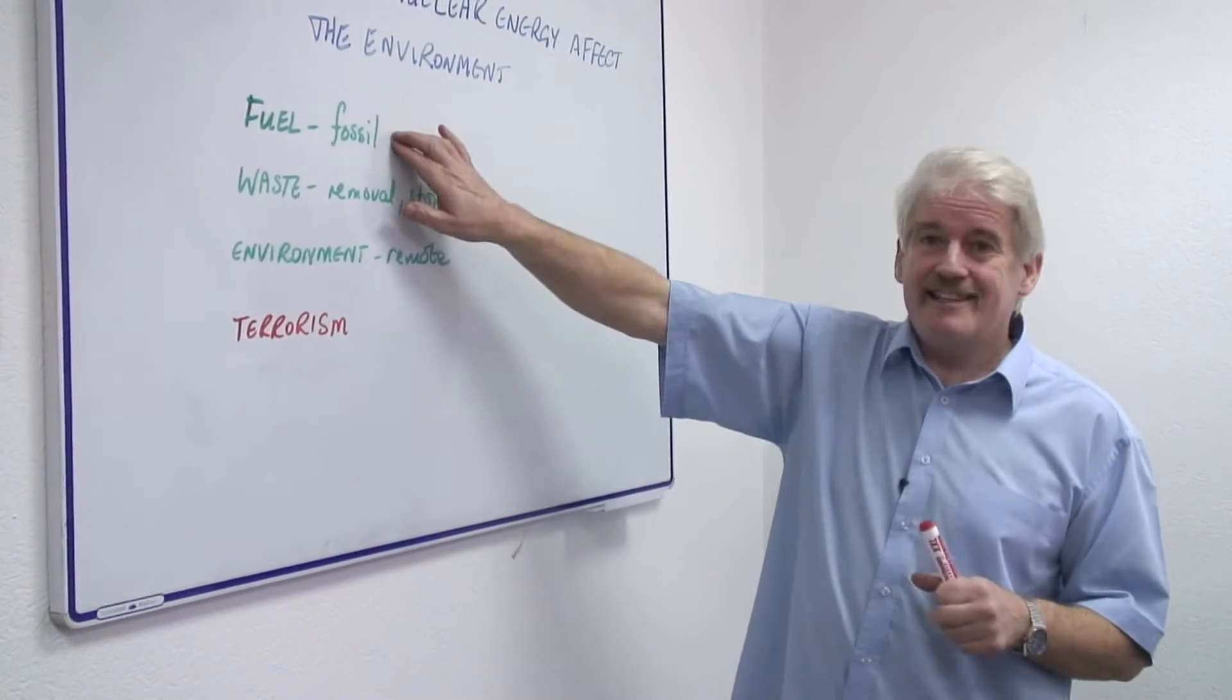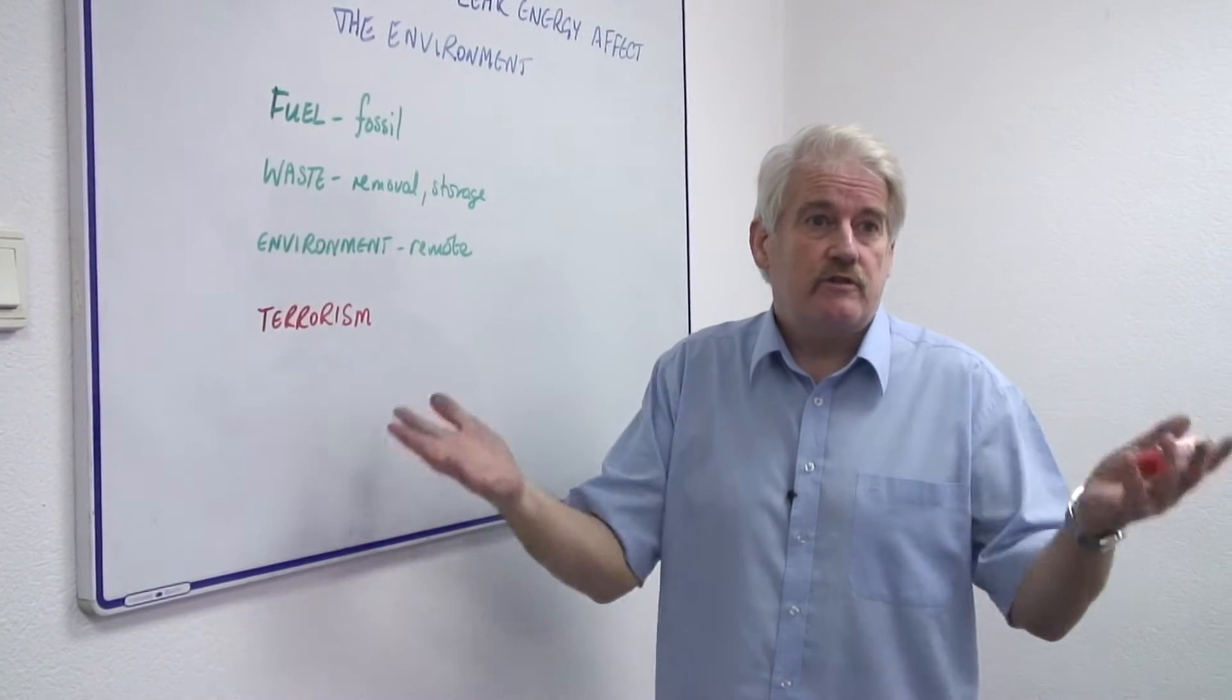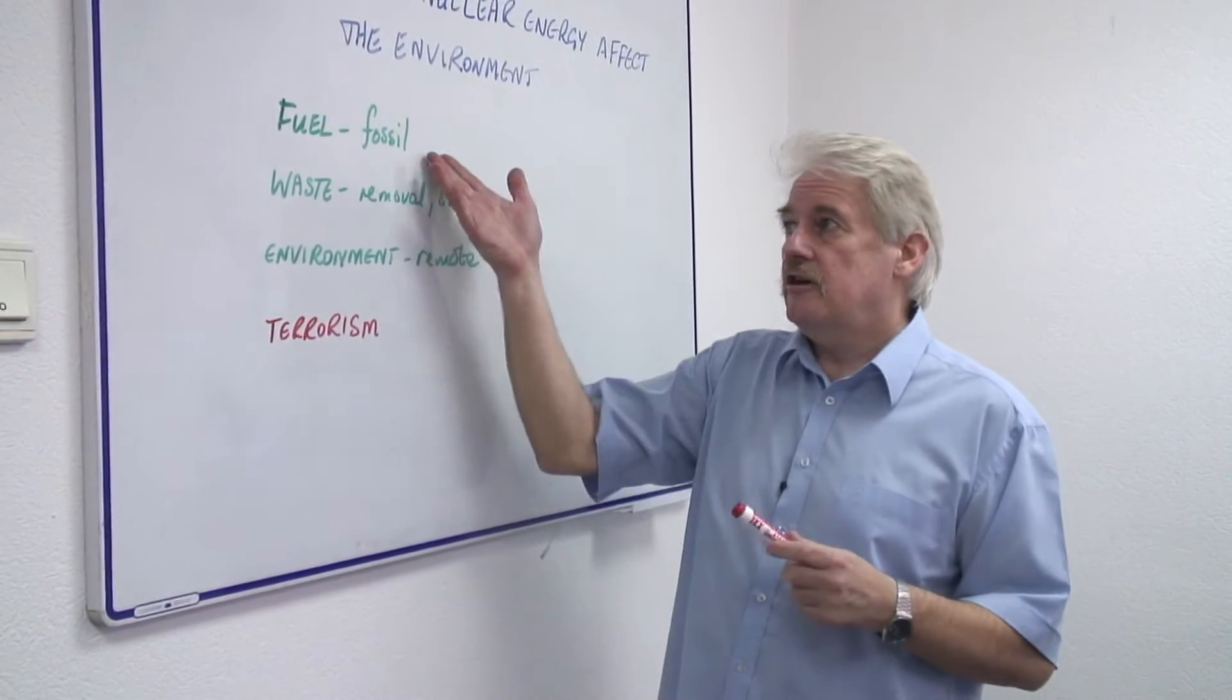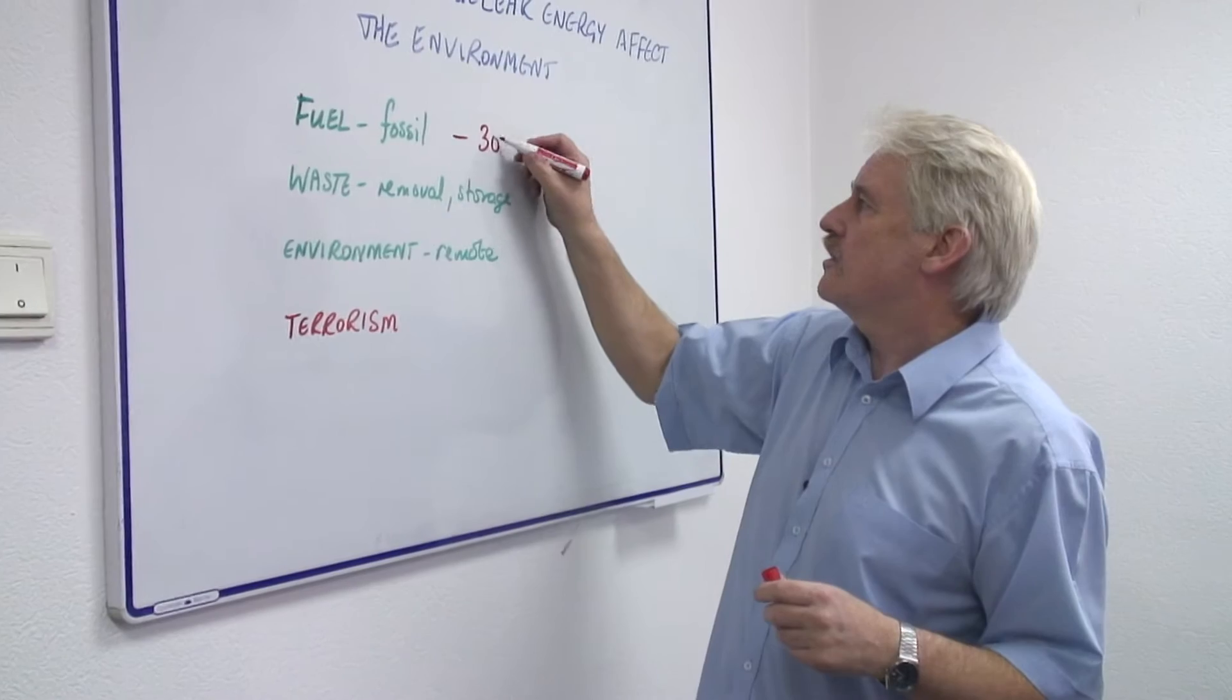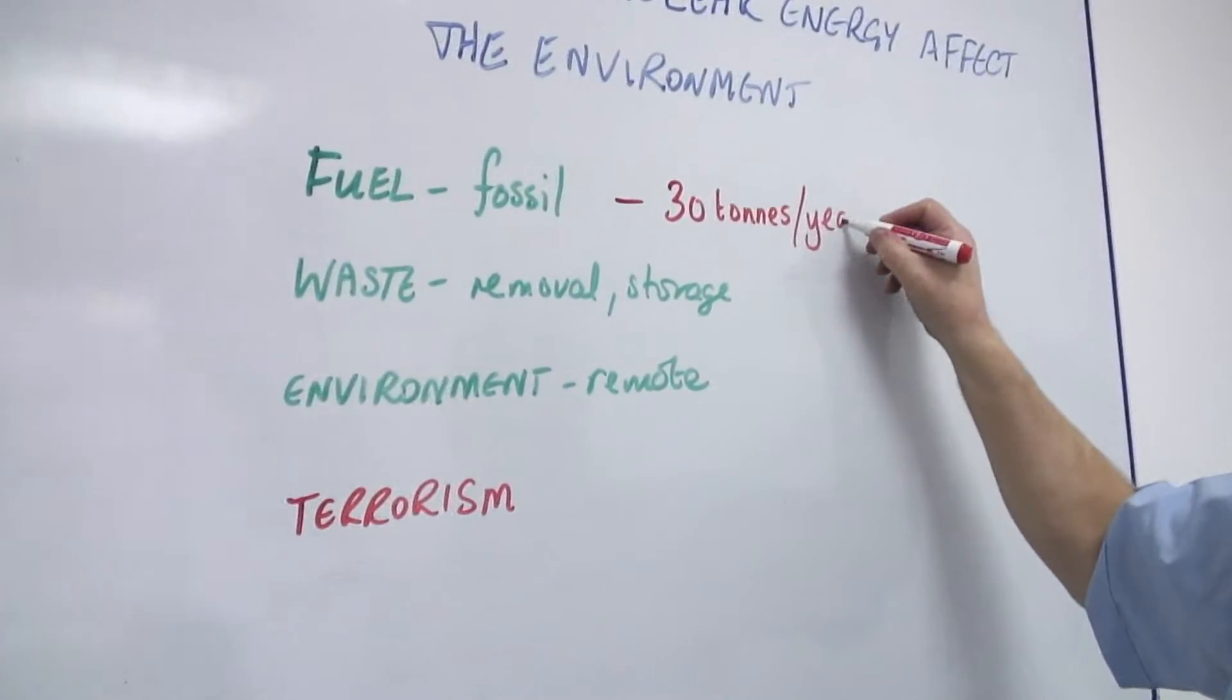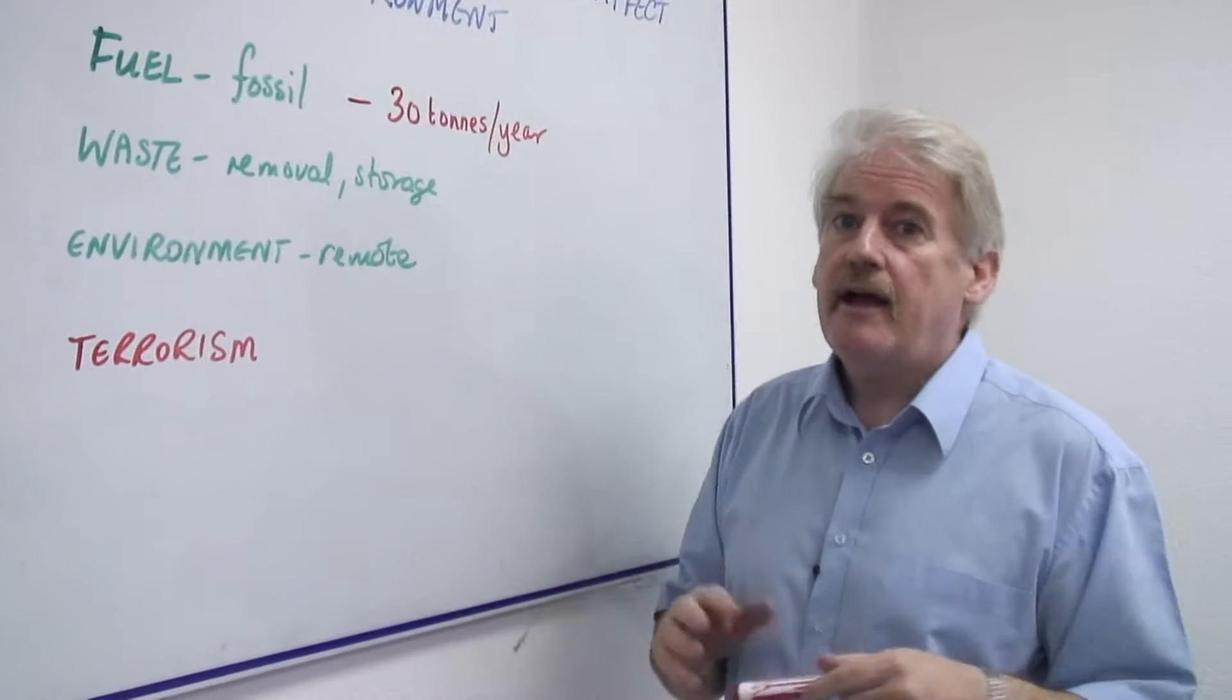Nuclear fuel is actually a fossil fuel. It comes out of the ground as uranium oxide, and it's refined and is used in nuclear reactors. The big advantage is that the amount of fuel for a nuclear reactor is just a few tonnes, maybe 30 tonnes per year. And if you've got 30 tonnes of material, that's one truckload per year. So that's not a huge amount.